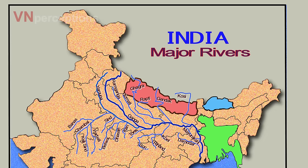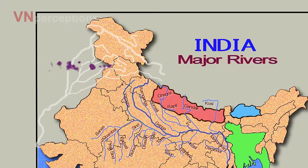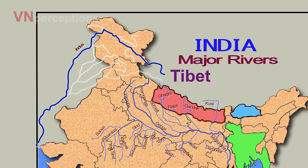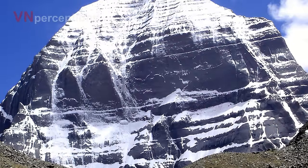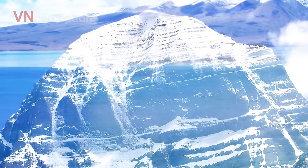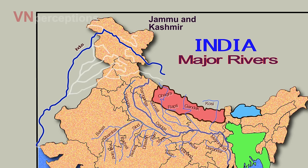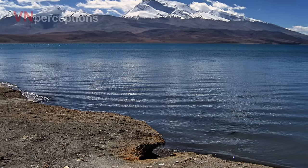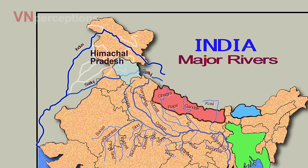The next river is River Indus. The Indus river is 3180 km long, making it one of the longest rivers in Asia. The river originates in the western part of Tibet in the vicinity of Mount Kailash and Lake Mansarovar. The river passes through Jammu & Kashmir and before joining the Arabian Sea it passes through Pakistan. It is the longest river and the national river of Pakistan. River Sutlej is the largest tributary of River Indus. It originates from Rakshastal lake in Tibet and flows through the states of Himachal Pradesh and Punjab before joining River Indus in Pakistan.